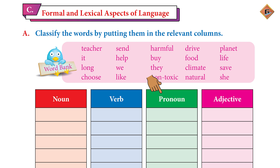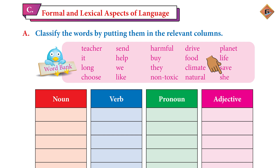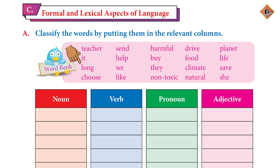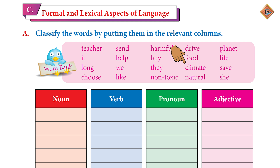What will come in the pronoun column? It, we, they, she. And what will come in the adjective column? Harmful, long, non-toxic, natural, and climate.